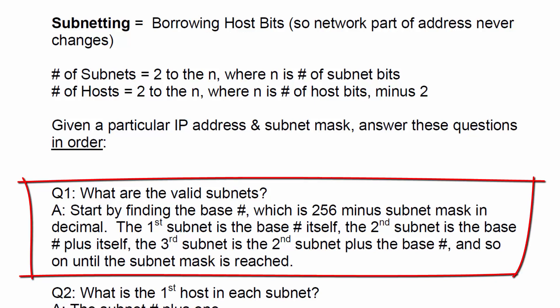You start by finding the base number, which is 256 minus the subnet mask in decimal. The first subnet is the base number itself. The second subnet is the base number plus itself. And the third subnet is the second subnet plus the base number, and so on until the subnet mask is reached.